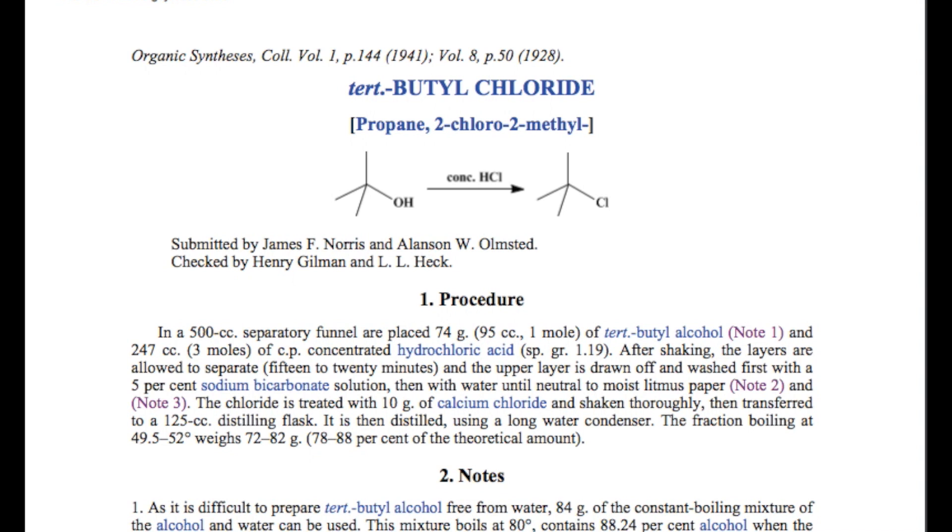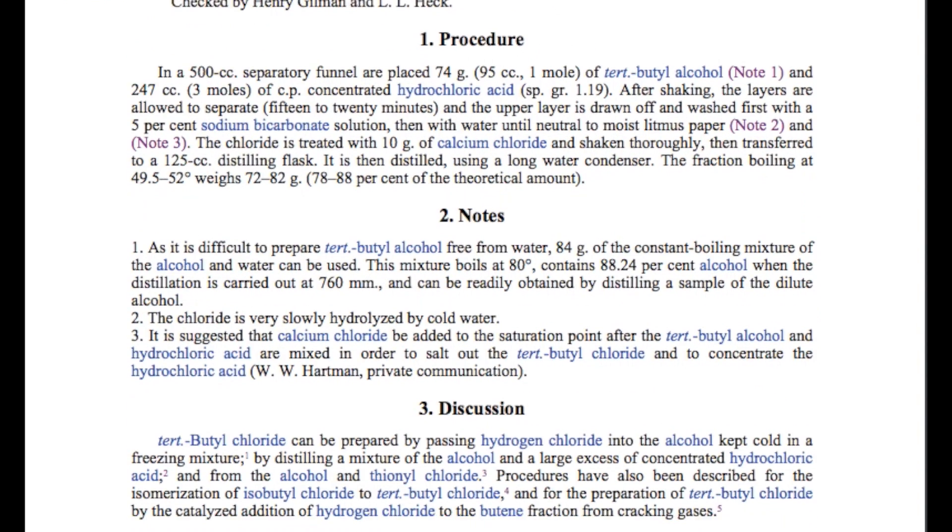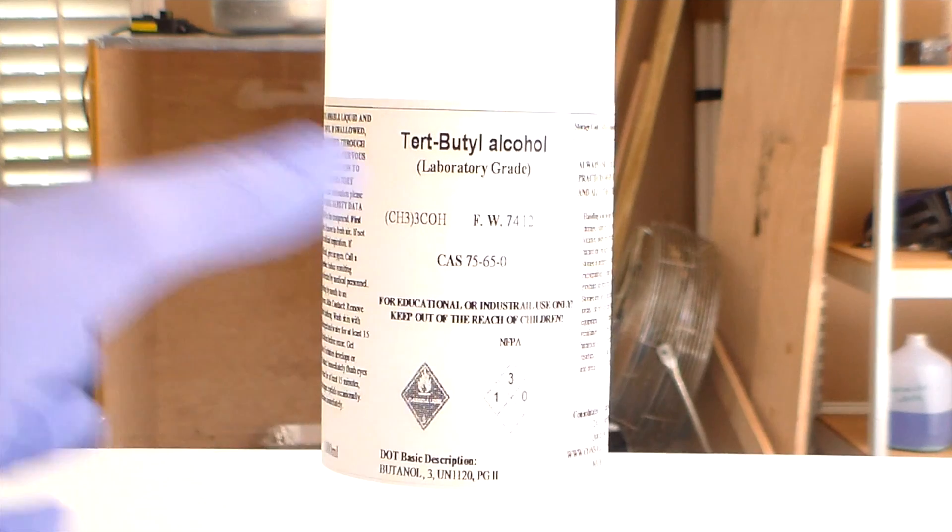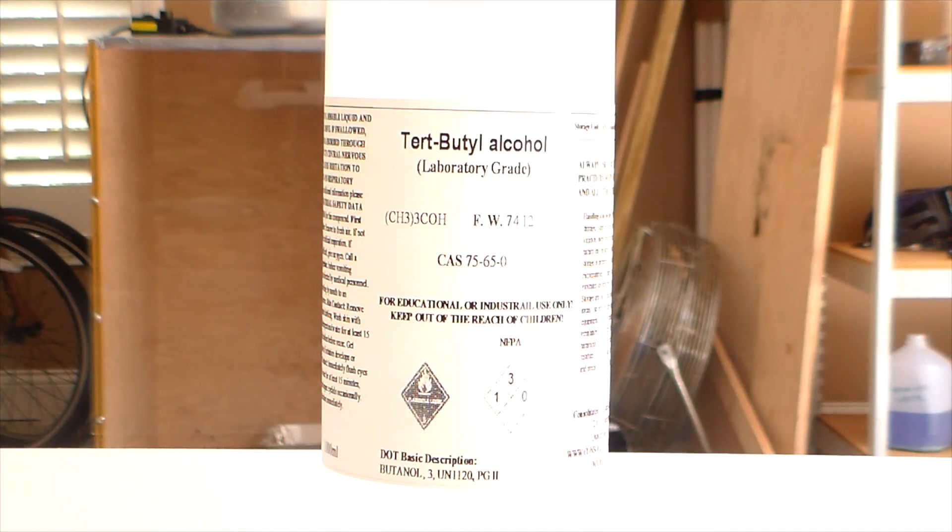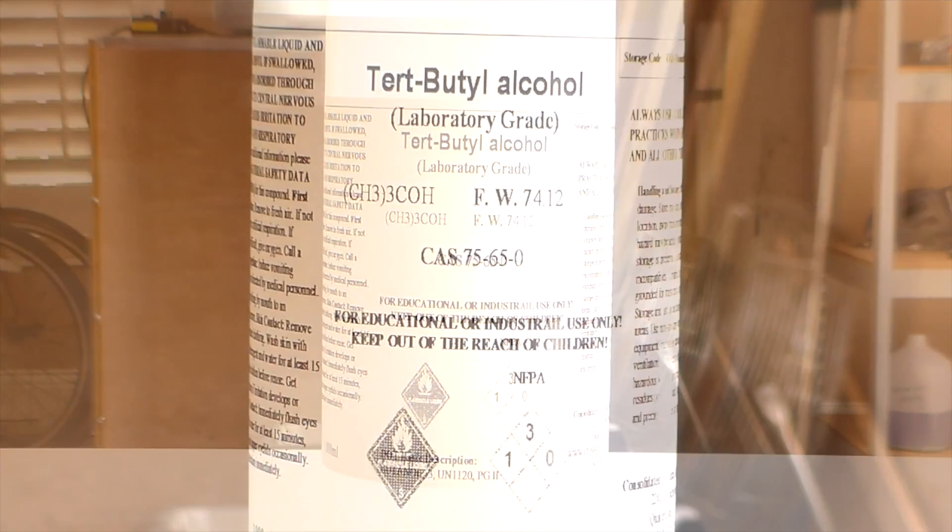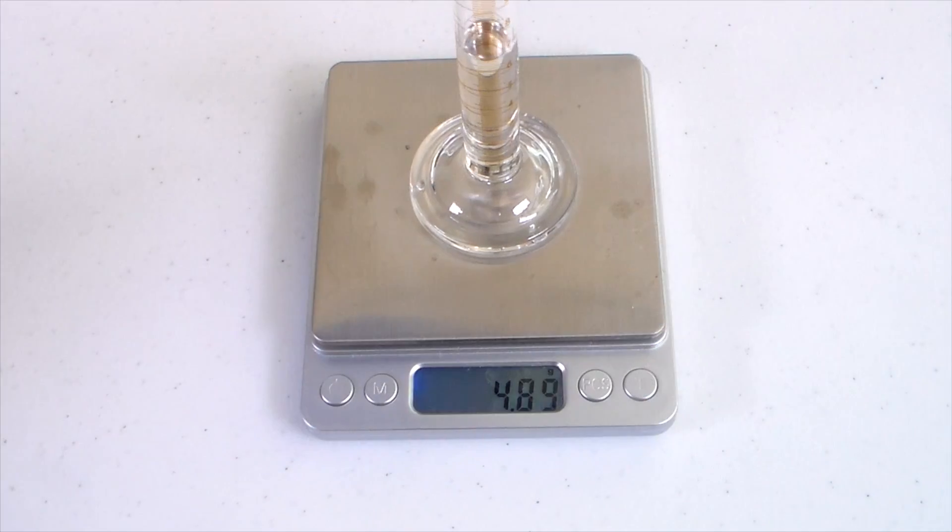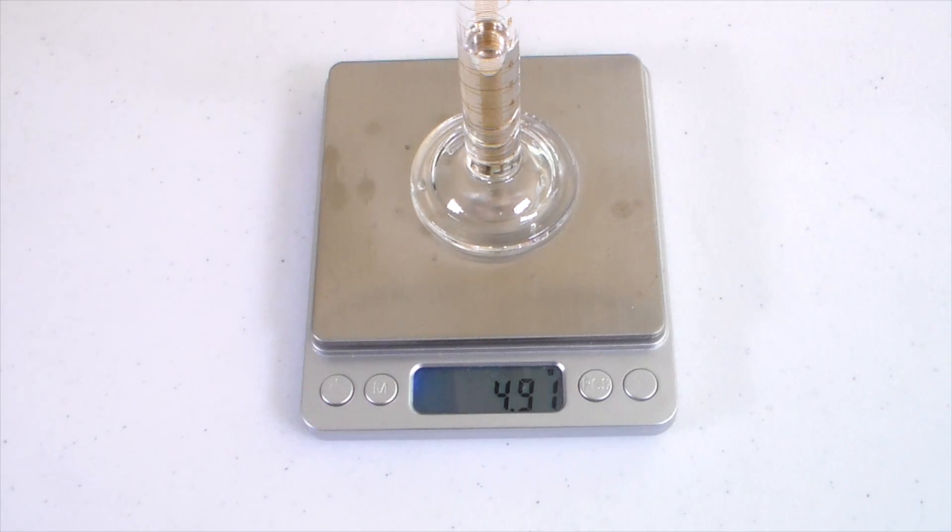An important note is that the procedure calls for one mole of anhydrous, or water-free, tert-butyl alcohol. However, it also notes that aqueous tert-butyl alcohol can also be used. The only problem is I wasn't sure of the concentration of my alcohol. I tried to determine the density of my tert-butyl alcohol, and use a chart online to see how much water it contained. However, I ran into an issue with that,